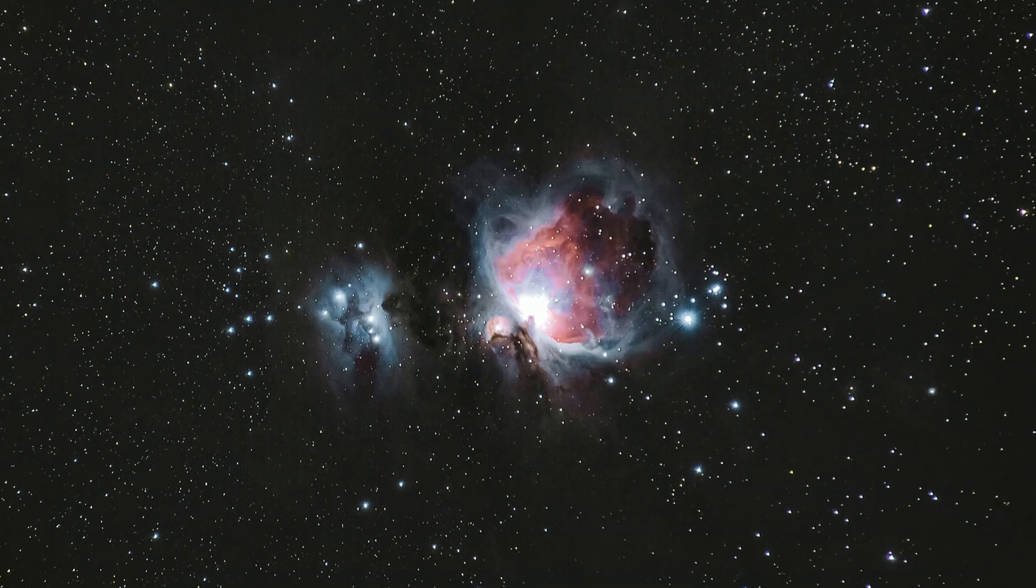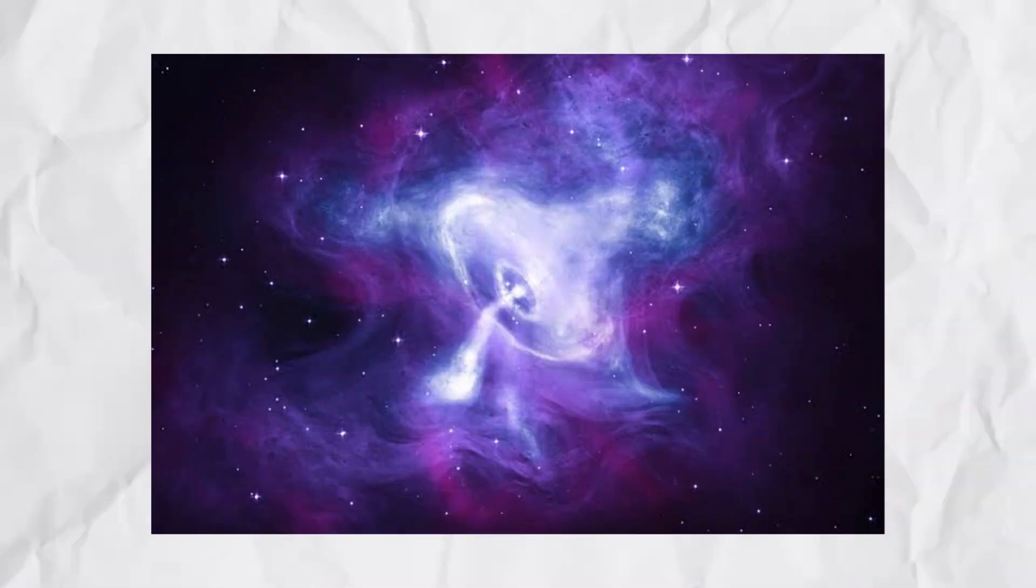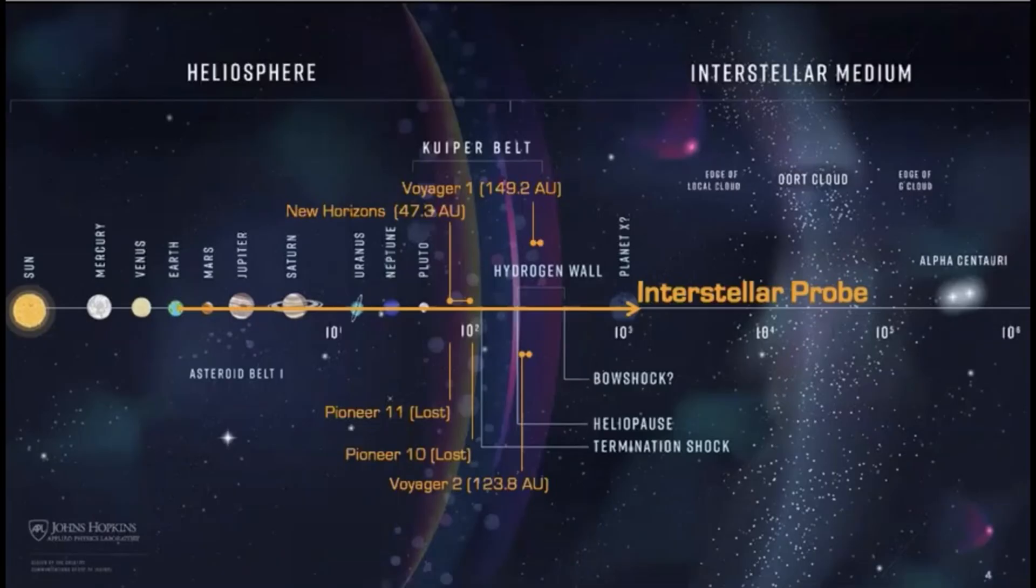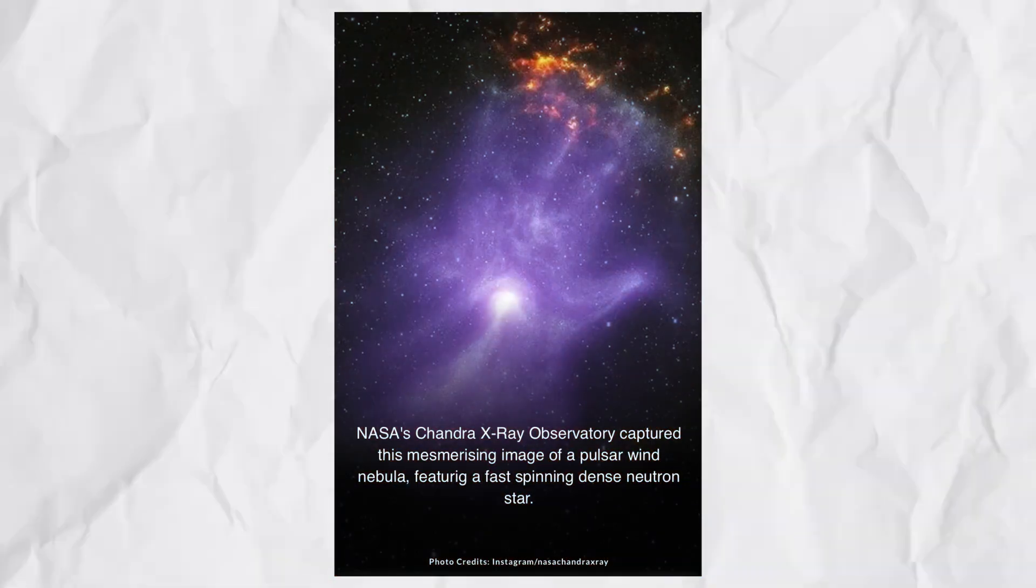Pulsar Wind Nebula. A pulsar is a rotating neutron star that emits electromagnetic radiation from its magnetic field. You can think of it like a lighthouse. The pulsar forms after a massive star goes supernova. The pulsar wind nebula forms when the pulsar ejects charged particles that interact with surrounding interstellar material.